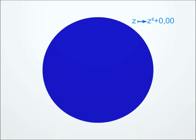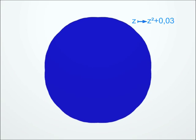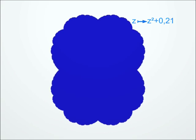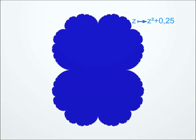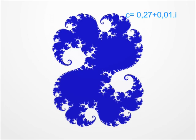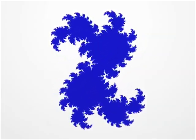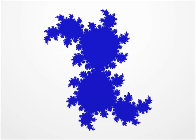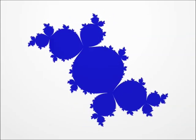But we can play the same game with other transformations. Like, for instance, those of the form z squared plus c, where c is a complex number that we can choose at will. For each complex number c, we therefore have a Julia set, whose shape changes when c changes. You can see a few examples here. Here is the one I called the rabbit.